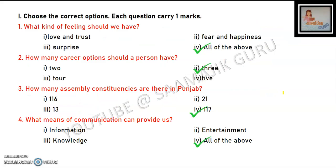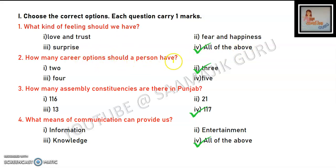Section A, solving the first question: What kind of feelings should we have? Options include love and happiness, fear and happiness, or all emotions. Next question: How many career options should a person have? The answer is 3.